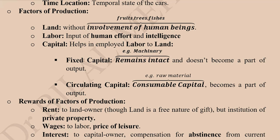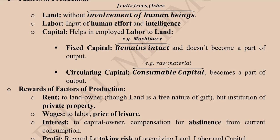Fixed capital, as the name suggests, remains unchanged after the production process — for example, machinery stays intact and does not become part of the output. Circulating capital, by contrast, continues to circulate from one form into another and becomes part of the output or product. It is also called consumable capital because it is consumed — for instance, the raw material used in the production process.